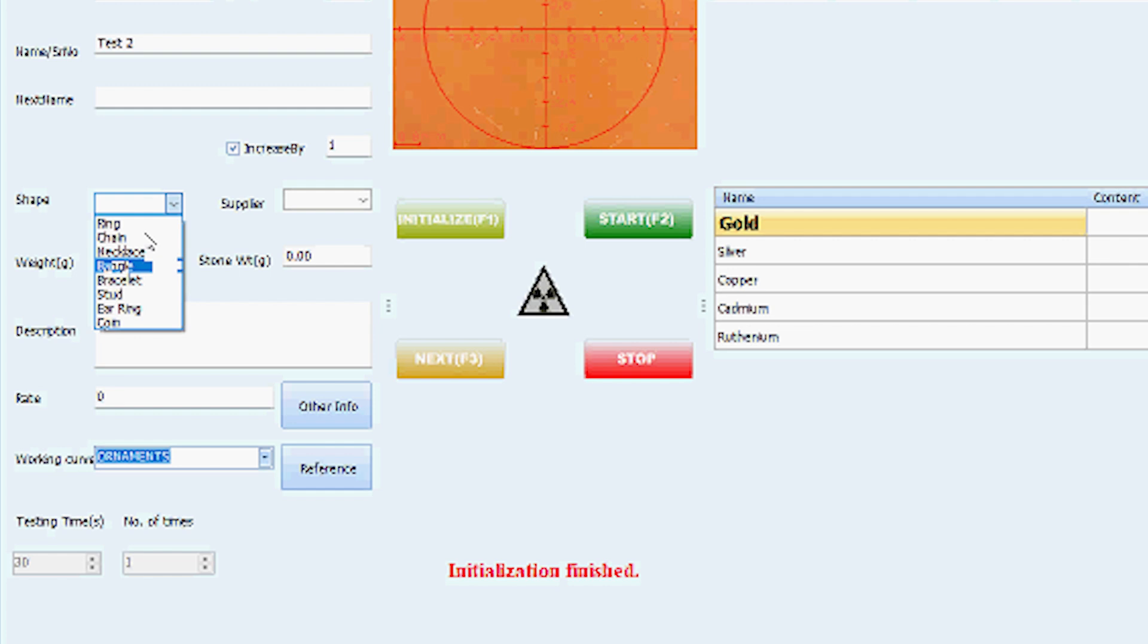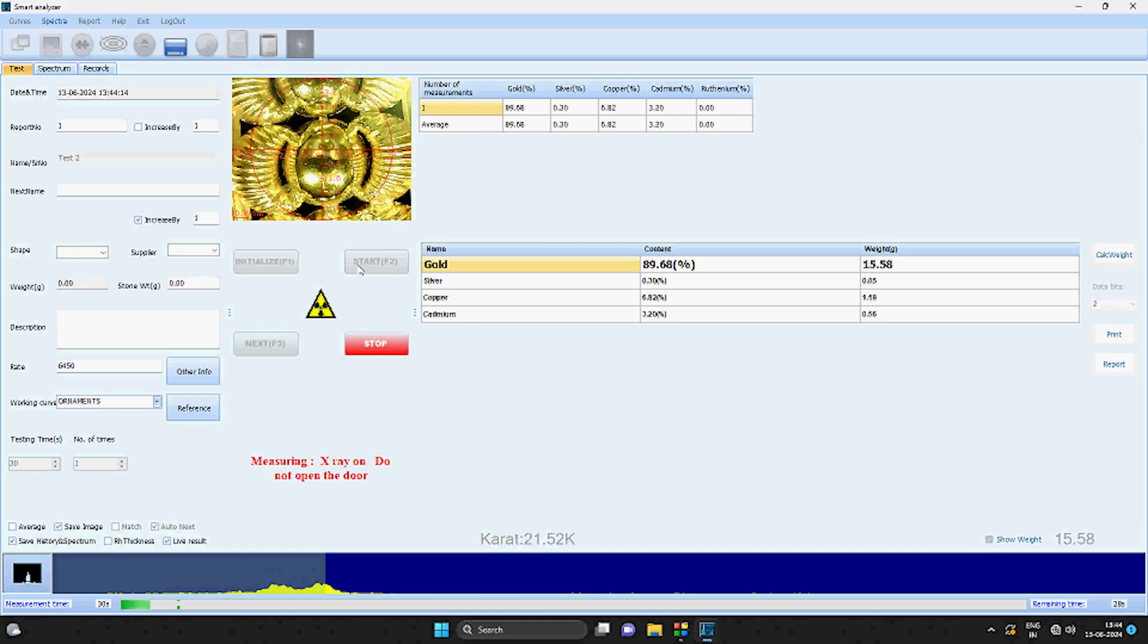While testing jewellery, users can input fields such as customer name and ornament description. Within fractions of seconds, the software shows results in real-time, concluding testing within 20 seconds.